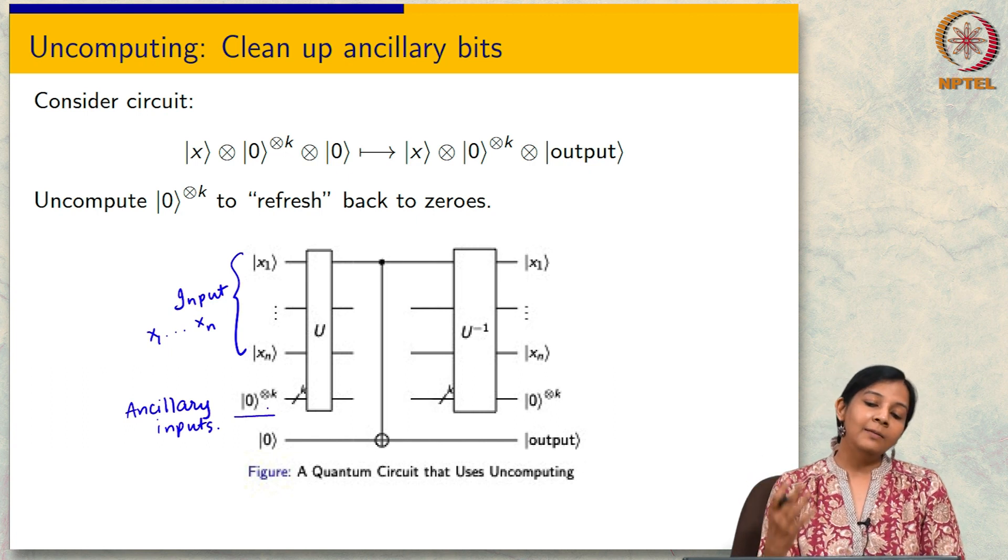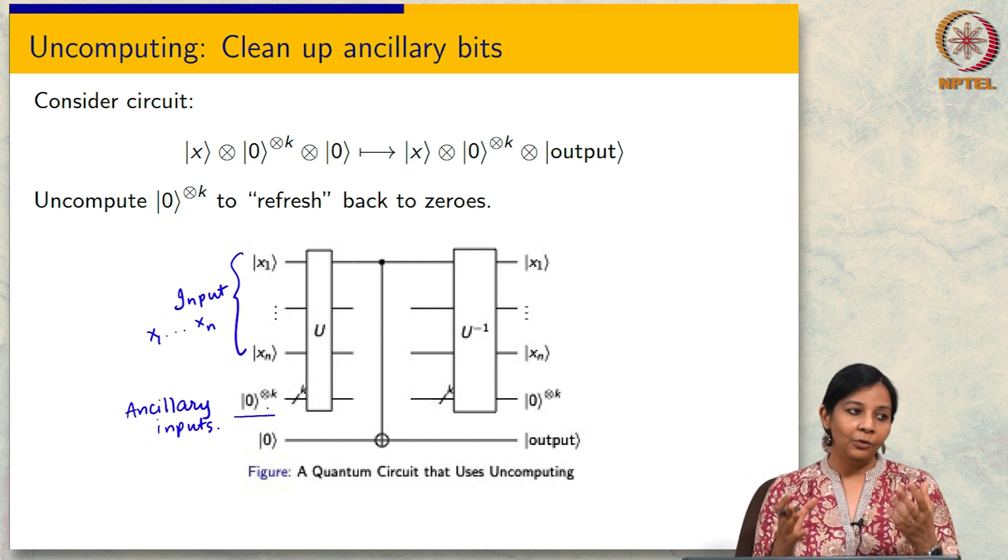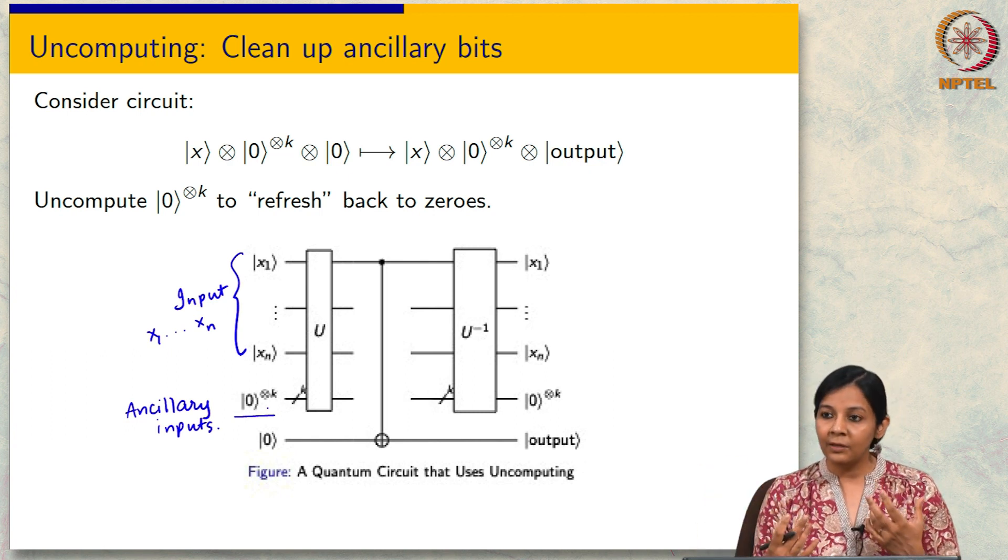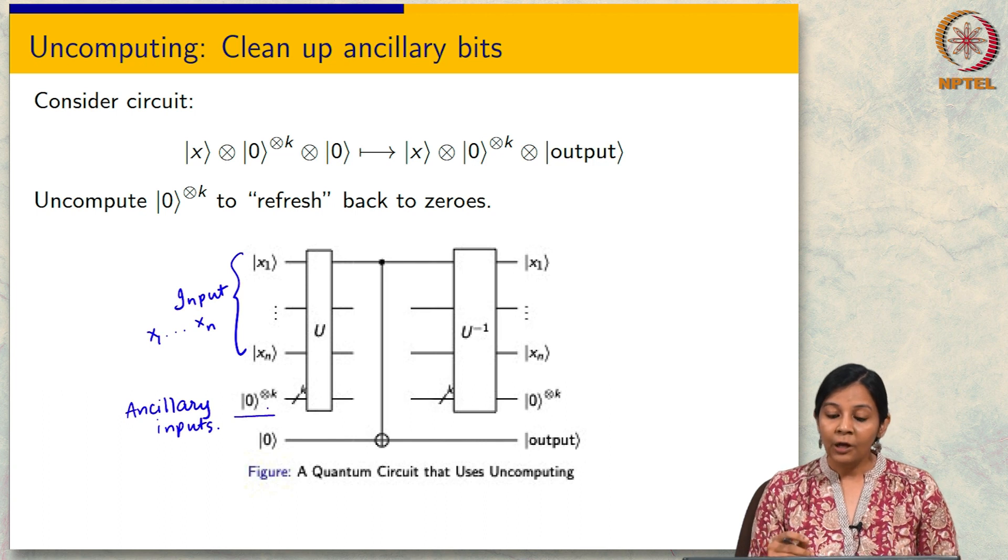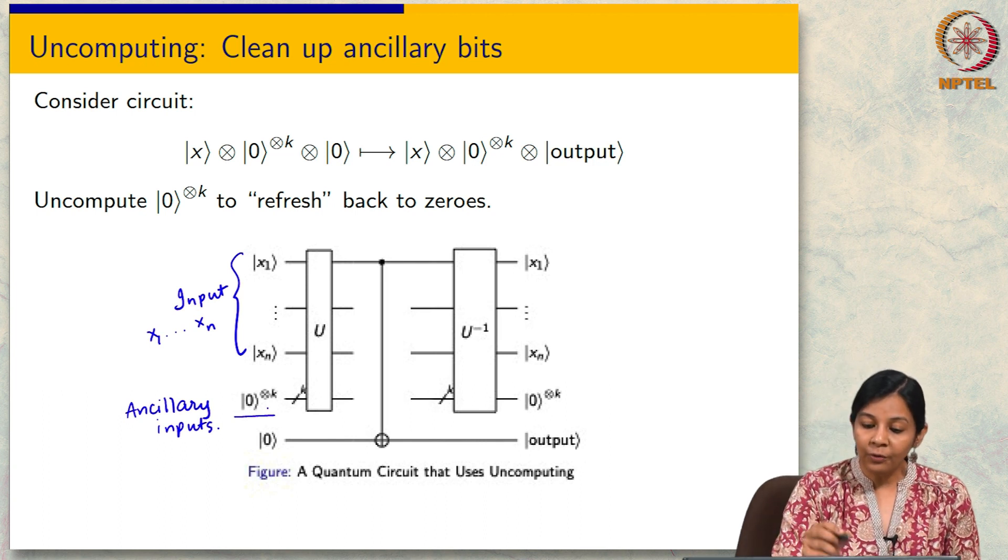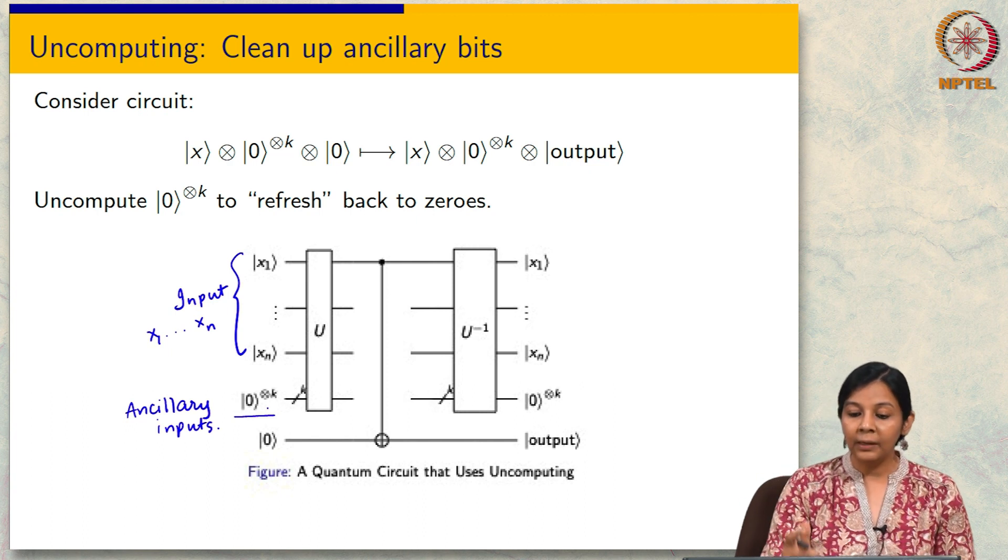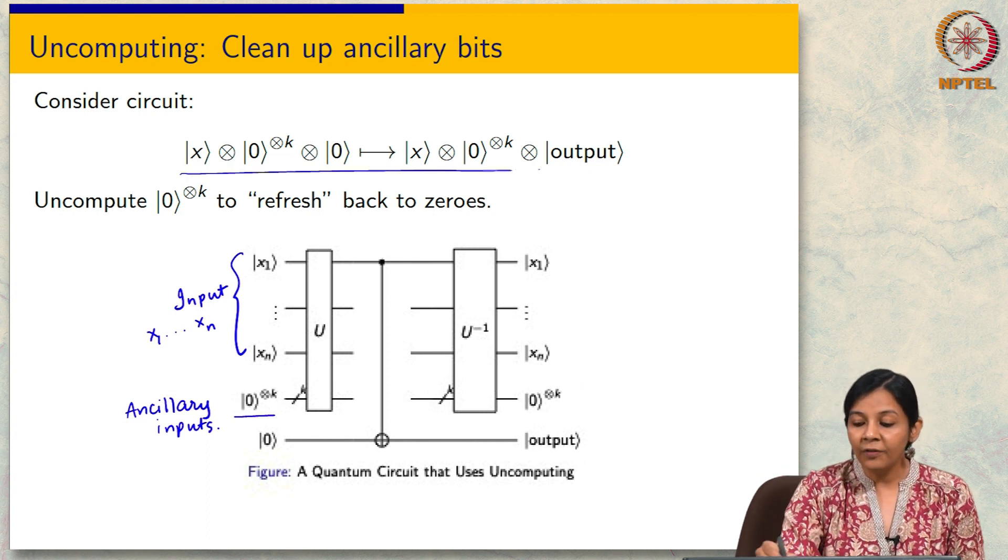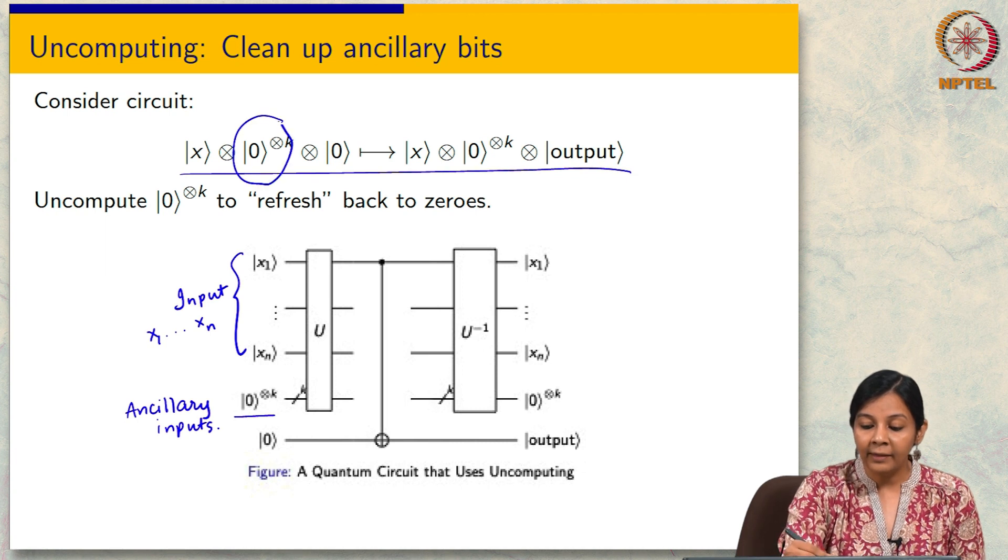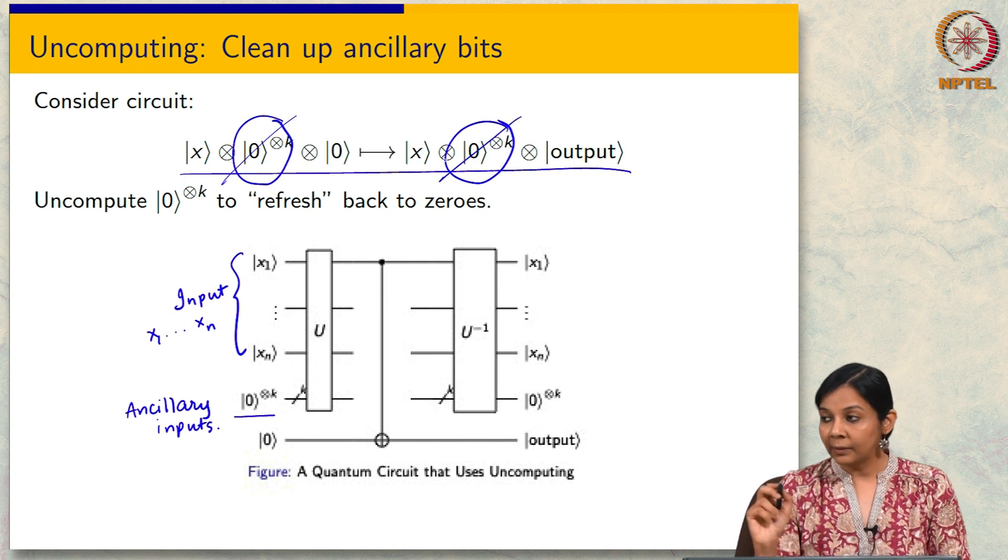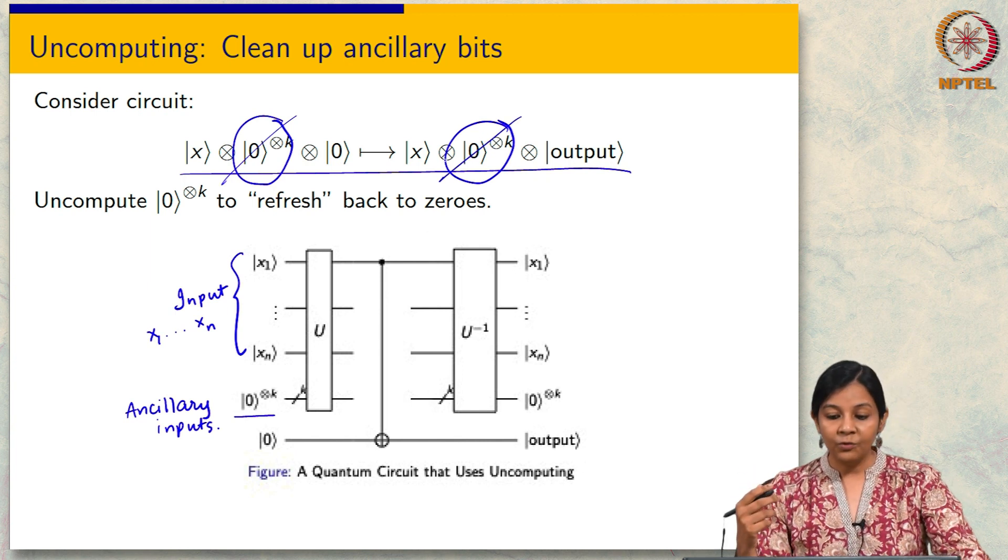The reason I am discussing this is because it cleans up our notation a little bit and as we go further it is very useful to have the simplest notation possible. What this motion of uncomputing is going to let us do is when we think of a circuit which has a bunch of ancillary bits, it is going to allow us to forget about them.